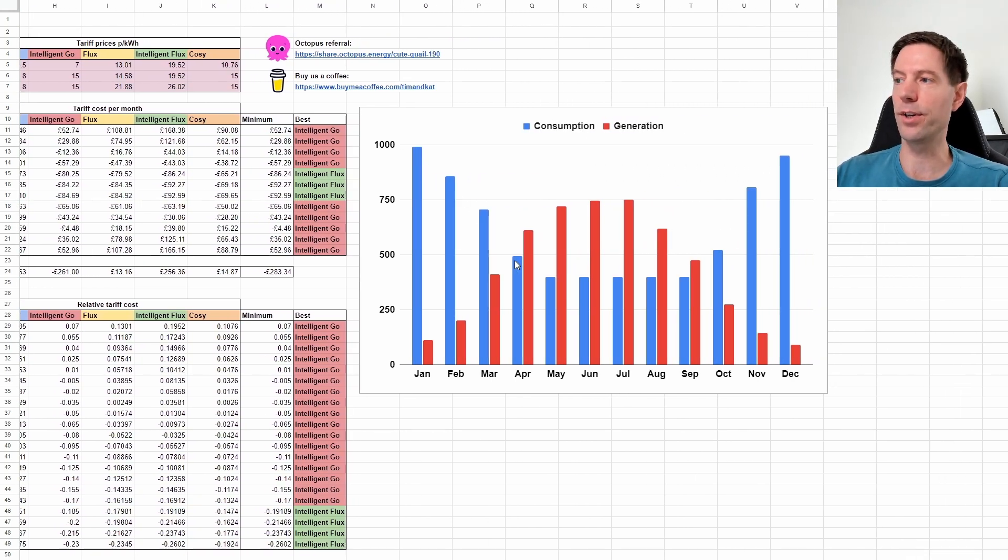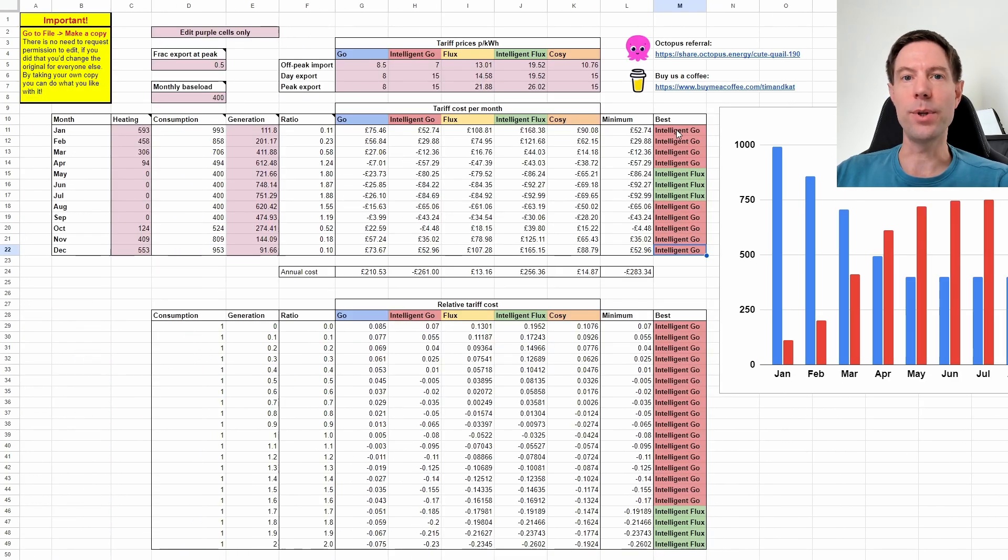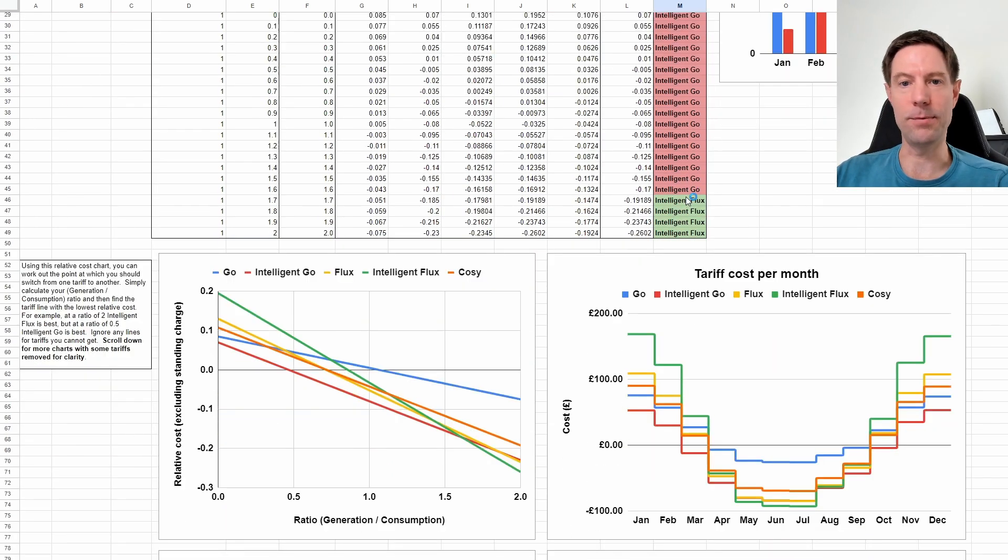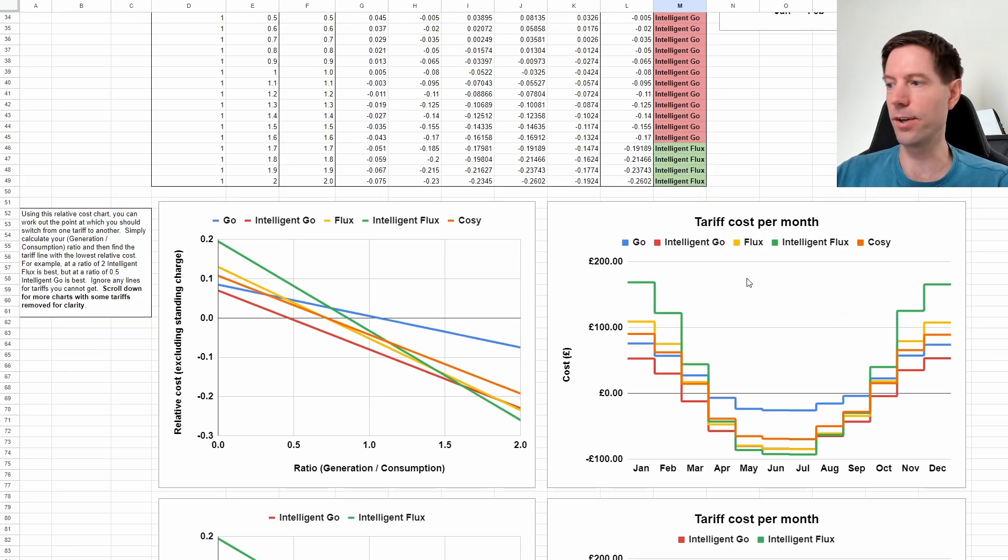And that then shows you a little handy chart here comparing the generation and consumption. You can see that the generation will peak in the summer and for me because we've got an air-to-air heat pump system for our heating, our consumption is higher in the winter, low in the summer and then again rising up into the autumn there. And what you can then do is check this column here and it tells you which is the best tariff for you to be on in any given month. So for us it's now suggesting that Intelligent Go is the best for 9 out of the 12 months with only 3 months in the summer where Intelligent Flux is the best tariff.